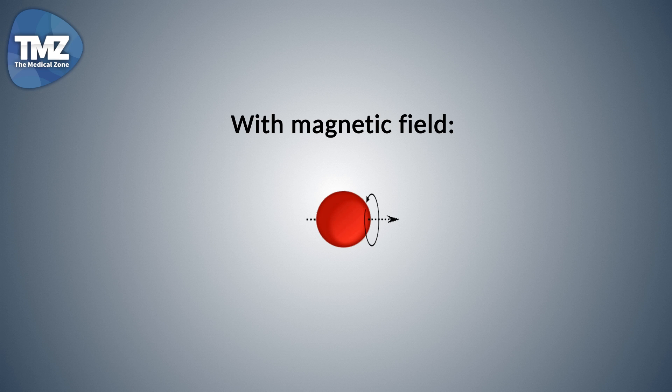After the radio frequency pulse the protons realign with the magnetic field and this is called relaxation. During this realignment, an energy signal is emitted which can be detected by sensors. The amount of energy released and the time it takes for the proton to realign with the magnetic field depends on the environment and the nature of the molecules.